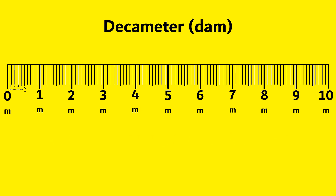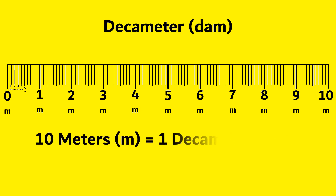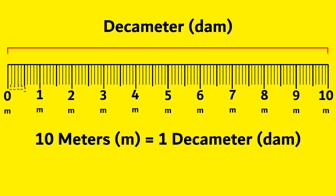Next, dekameter. 10 meters is equal to 1 dekameter. From 0 meters to 10 meters is equal to 1 dekameter.